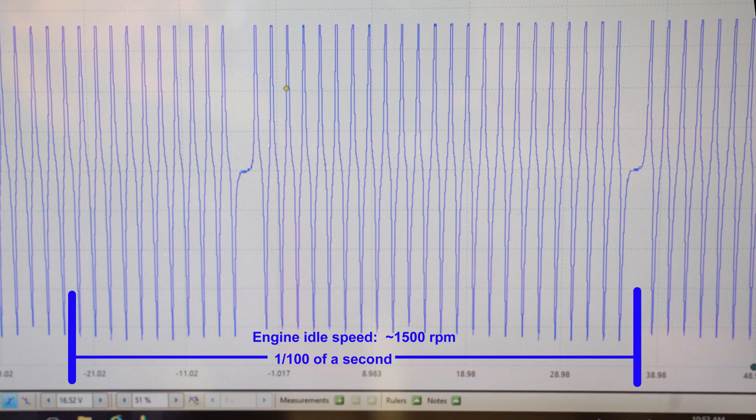The ECU counts the number of AC cycles per second, spaced by this missing cycle, to determine engine RPM and crankshaft position. If the ECU misses counting 30 AC cycles, it will trigger P0336.